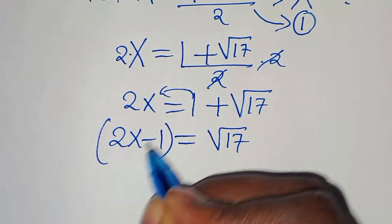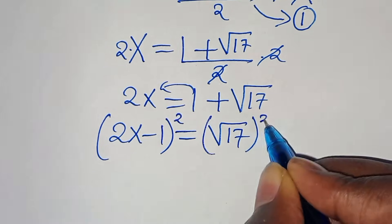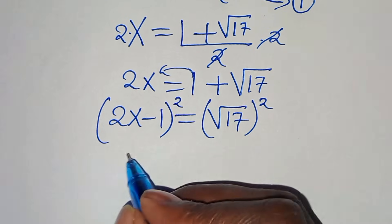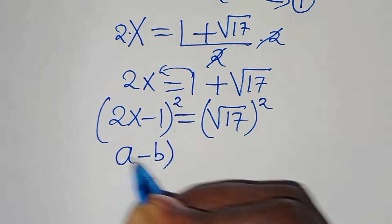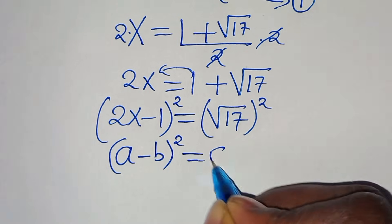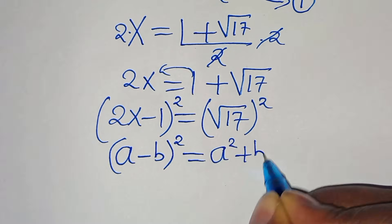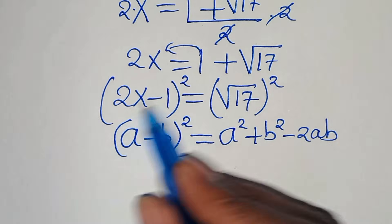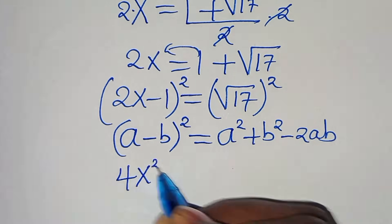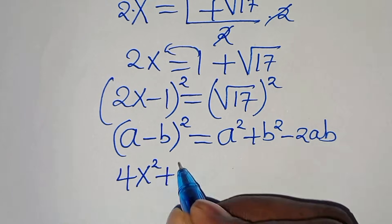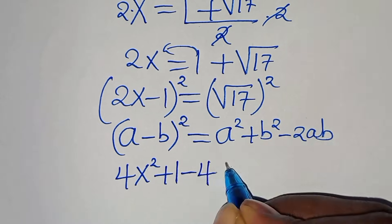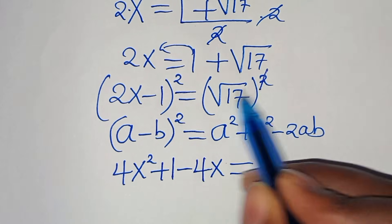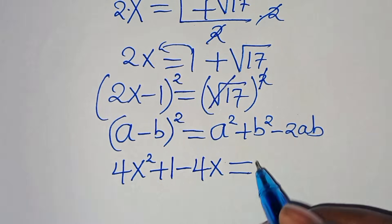Now let's square both sides. So (2x minus 1) squared is in the form (a minus b) squared, which we can express as a squared plus b squared minus 2ab. Applying this algebraic identity, we have 4x squared plus 1 minus 4x. This equals root 17 squared, which eliminates the square root sign, giving us 17.